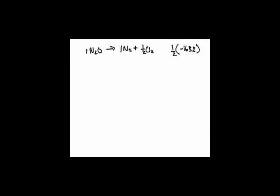So to do that — it's reaction two. If I flip it, NO₂ goes to NO plus ½O₂. So what I did is I multiplied that by half, but it'd be negative ½, because I flipped it, times the value, which was negative 113.1 kilojoules.